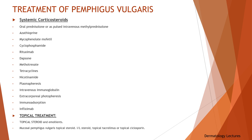Other immunosuppressive drugs are used off-label to reduce steroid dose and may be required for years. These most often include azathioprine, mycophenolate mofetil, cyclophosphamide, and rituximab — now FDA-approved for primary treatment of pemphigus vulgaris. Other medications sometimes used include dapsone, methotrexate, tetracyclines, nicotinamide, plasmapheresis, intravenous immunoglobulin, extracorporeal photopheresis, immunoadsorption, and infliximab — a TNF-alpha inhibitor. Other considerations include vaccination (live vaccines are contraindicated), baseline ophthalmological assessment, and psychological support if needed.